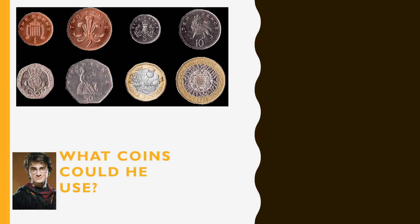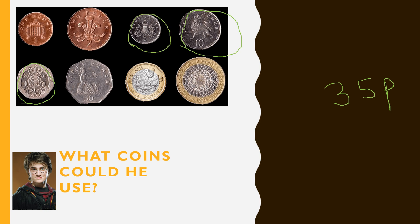This question is an extension from the previous slide. What coins could Harry use to make the total amount? For example, if the total amount is 35p — we know it's not, but we're using it as an example — what coins could Harry use to make 35p? We could use 20p, 10p and 5p. If you add them all together, it gives you 35p. This is the same approach you'd use to work out how many coins he could use from the total amount on the previous page.